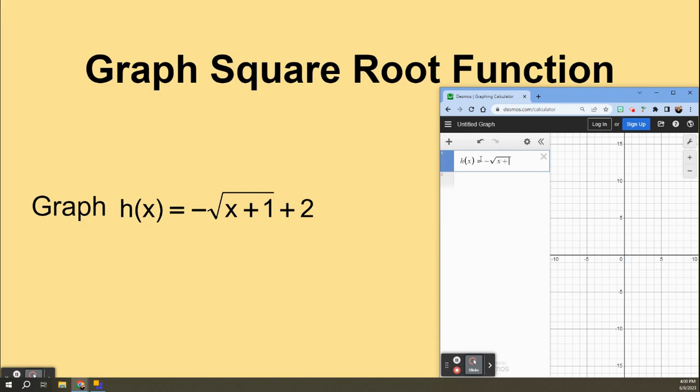Then you can type in x plus 1, and now before I put the plus 2, I've got to get out from underneath that square root. So I'm going to use the right arrow to get out from the square root, and I can type my plus 2.